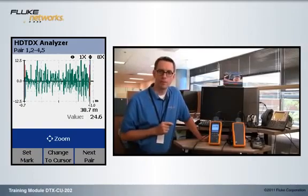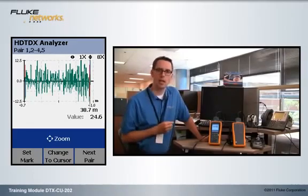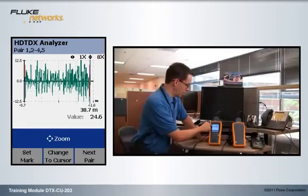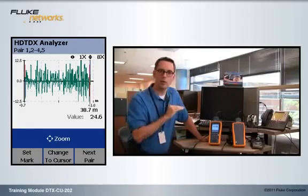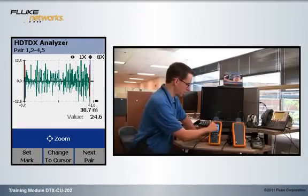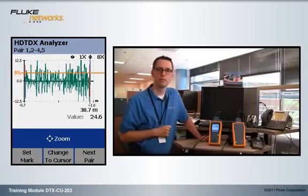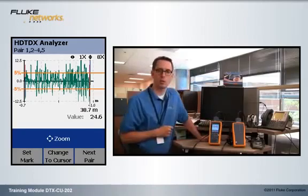A general rule of thumb, and it's not in the standards, this is just a diagnostic tool, is that we don't want to see more than 5% happening in the cable. So 5% just happens to be a little bit less than halfway on the screen here. Let's put in those two markers, the 5% marker across the top and the 5% marker along the bottom.